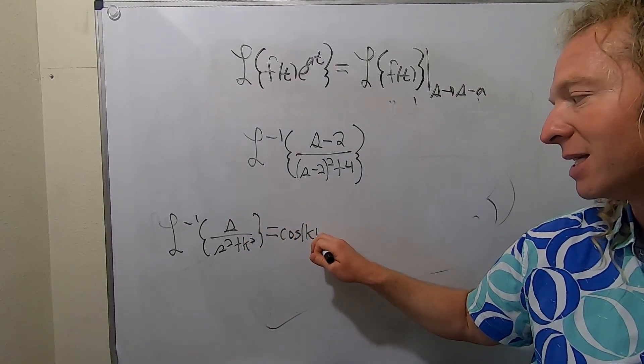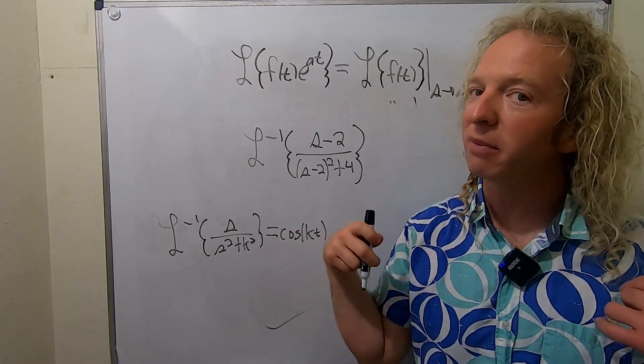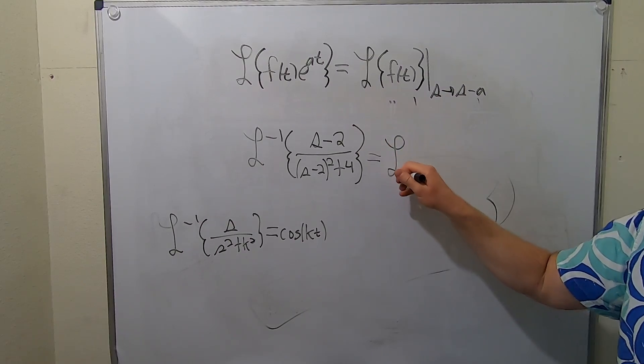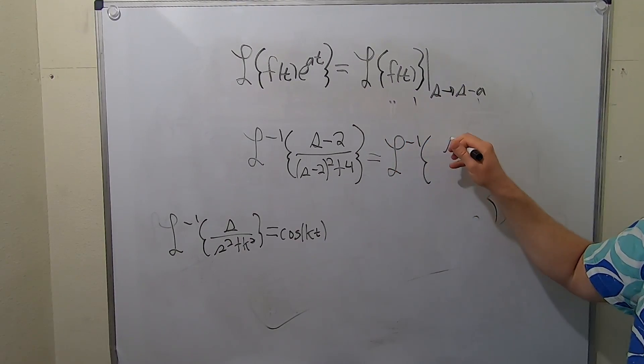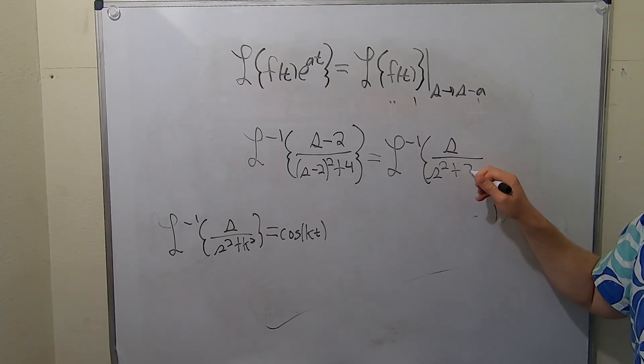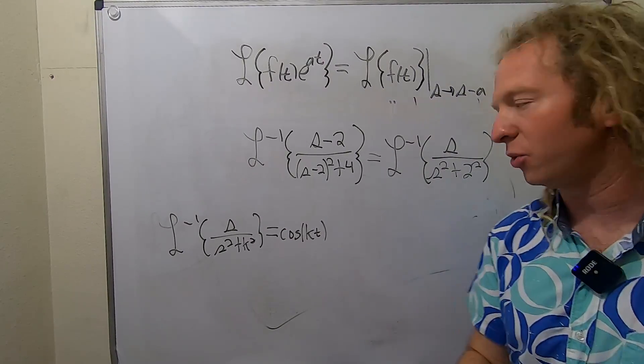Remember, cosine has the s, sine has the k. So here it's not s, it's s minus 2. But we can make it an s using our shifting powers. So this is equal to the inverse Laplace. So replace the s minus 2 with an s. And this is s squared plus 2 squared. You can think of it as 2 squared. k is going to be your 2.